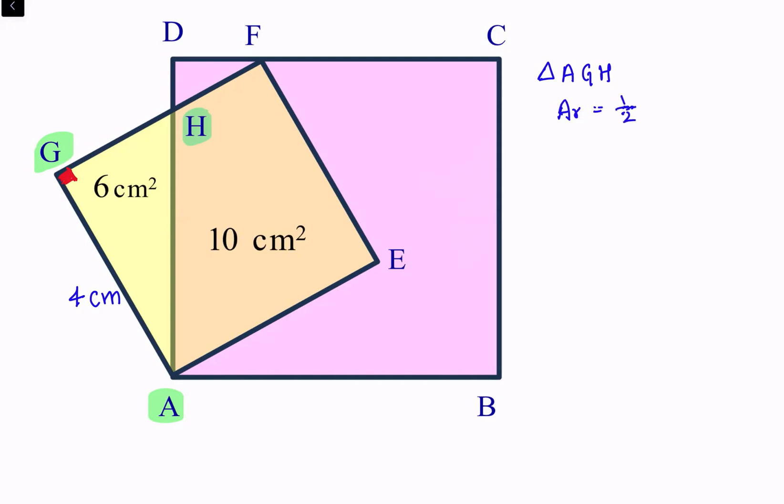So that will be GH times AG. Putting the values, area is 6 equals half of GH times AG, which is 4. Solving it, we'll get value of GH as 3 centimeter.